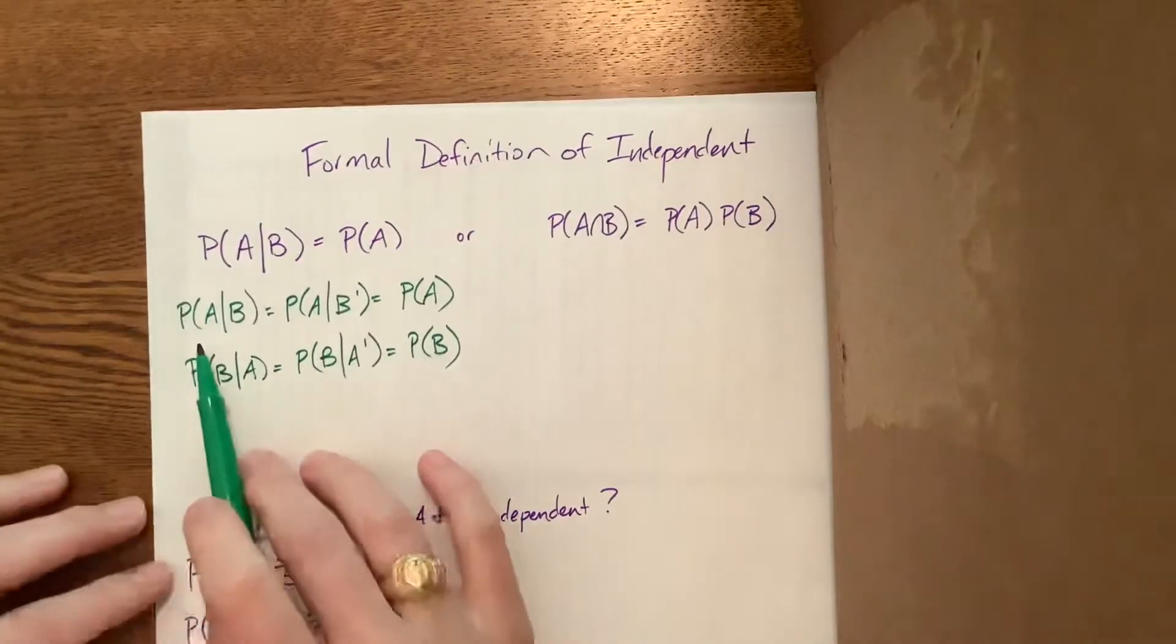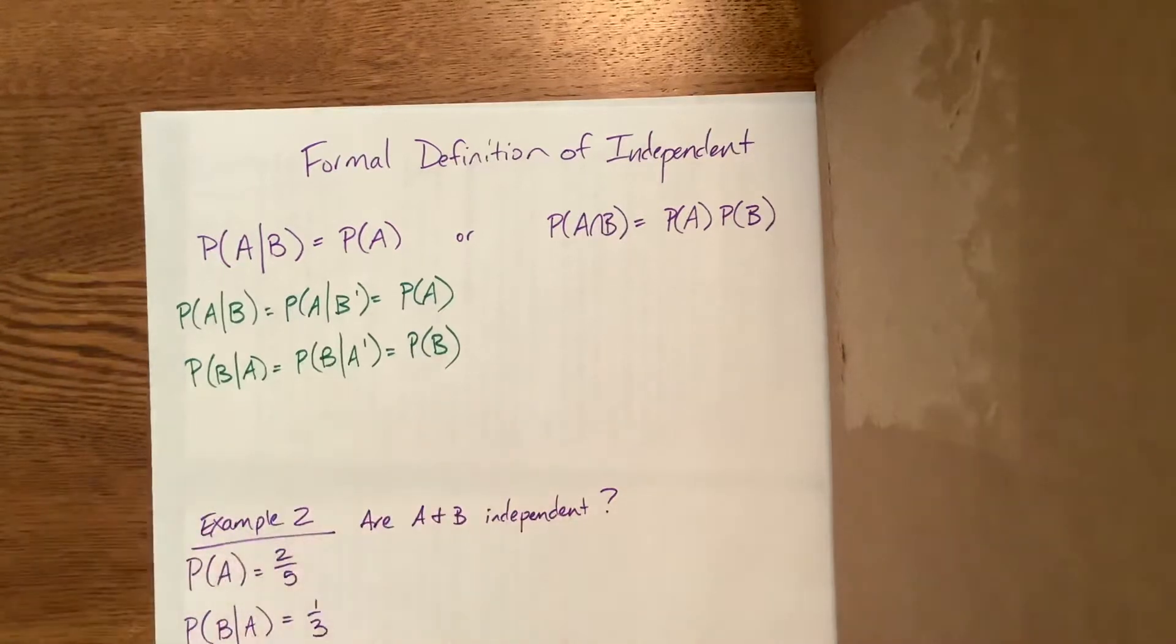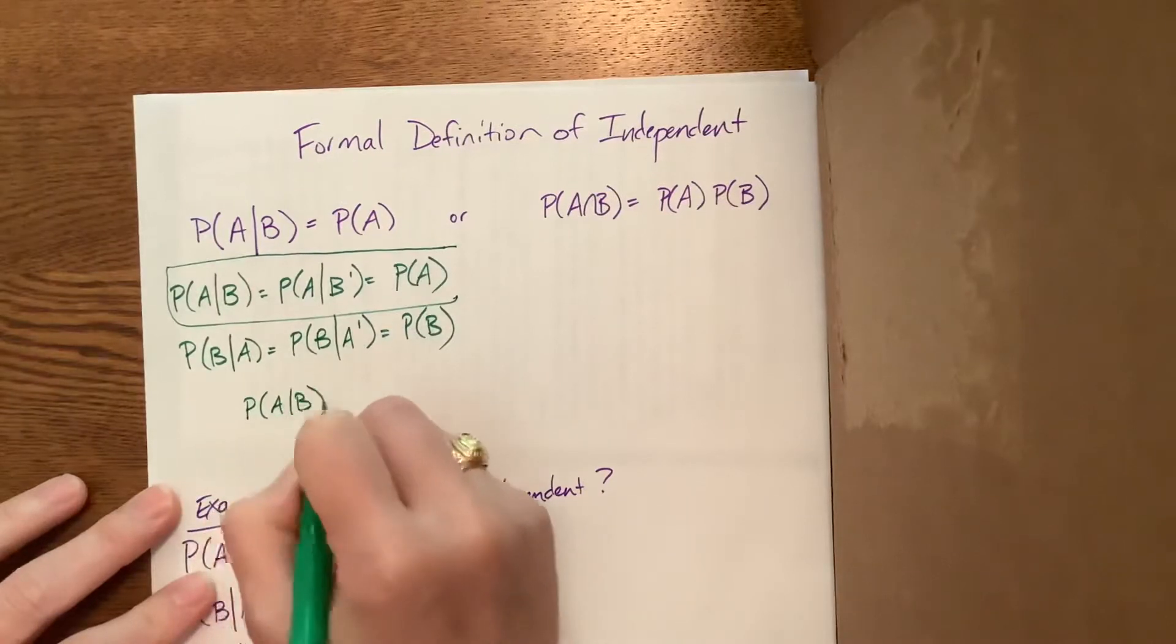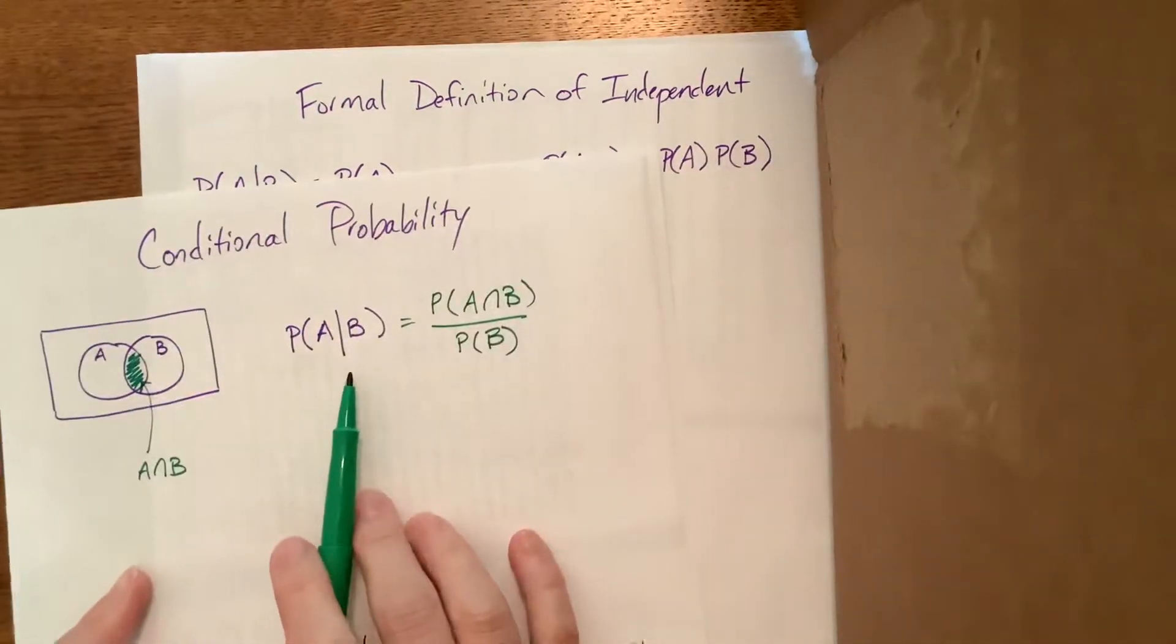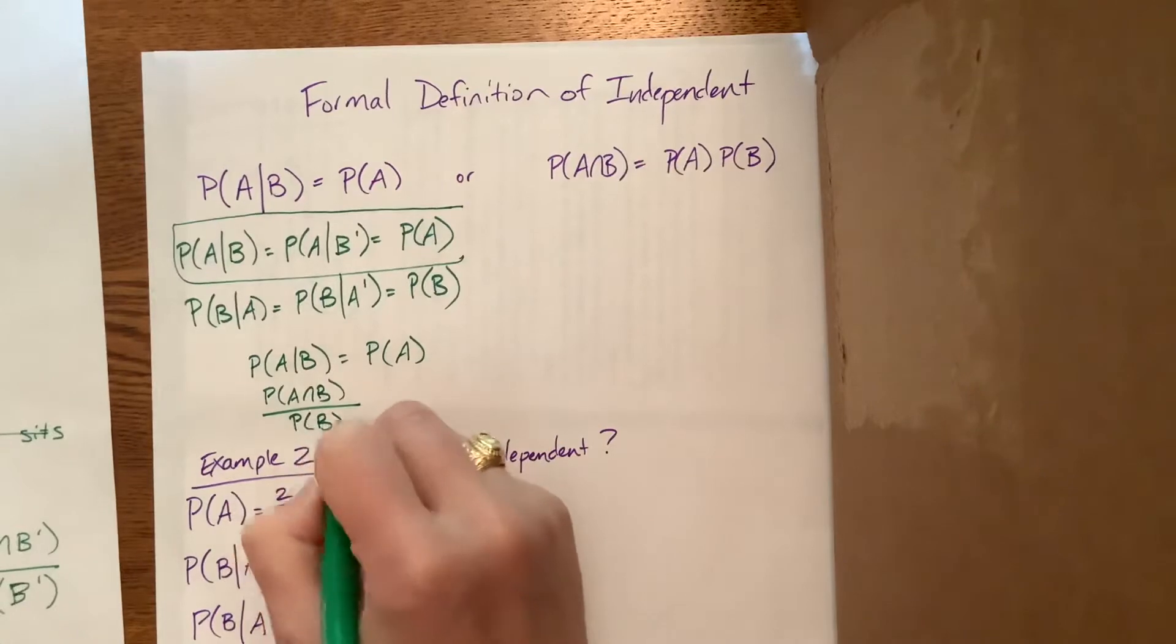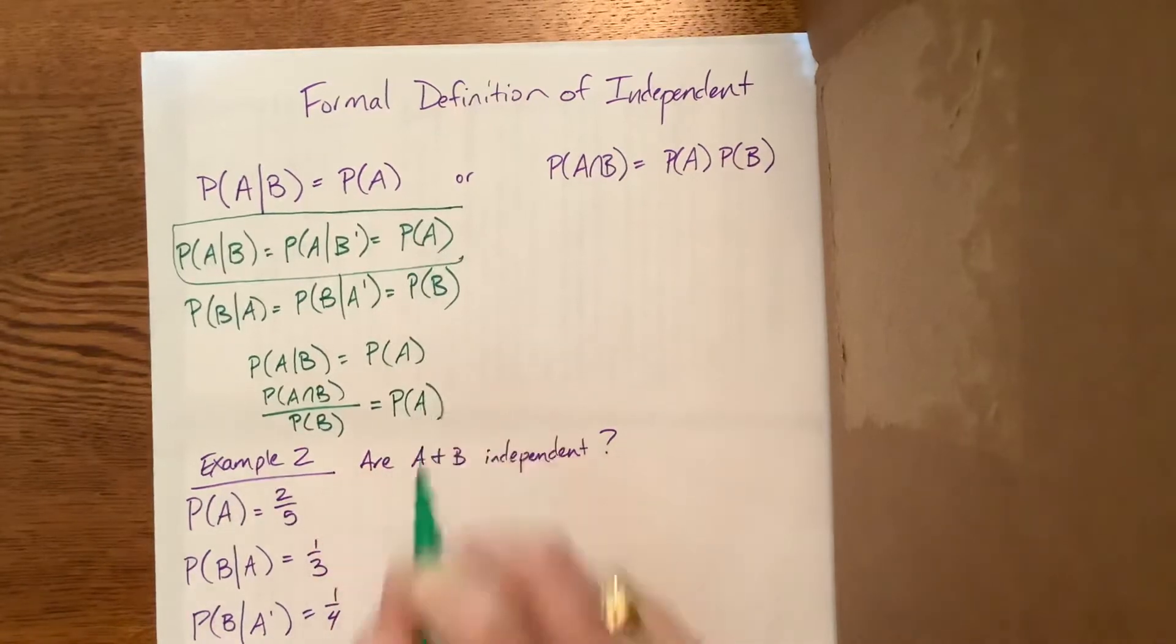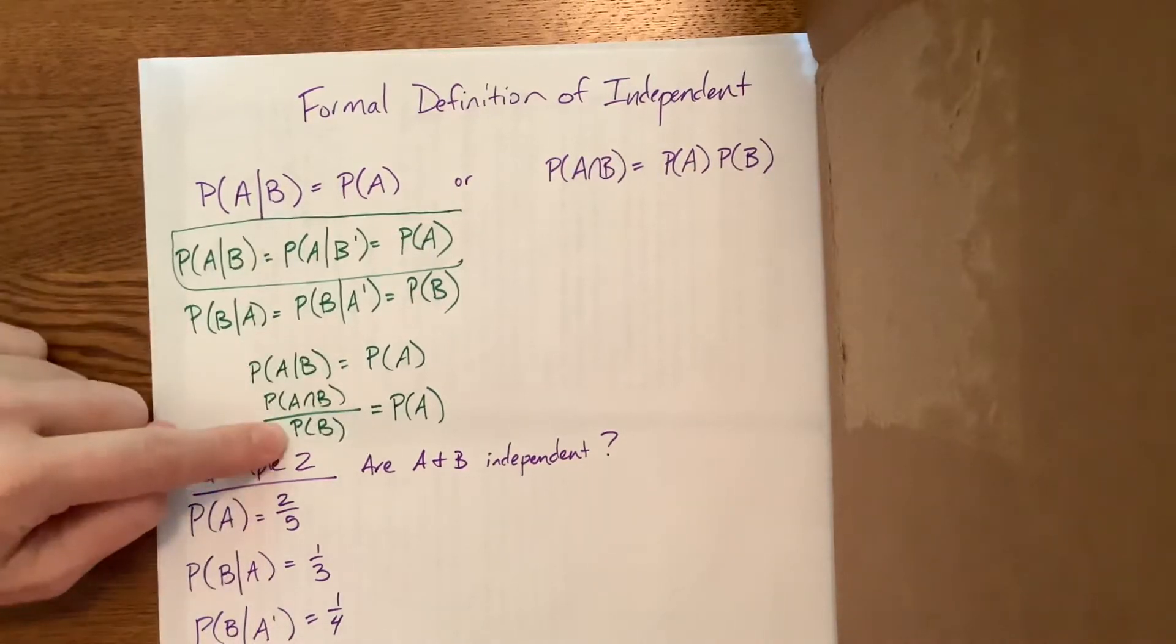In other words, what we're saying here is B or not B has no impact on what happens with A. So if this is true, you may remember from our previous video on conditional probability, the probability of A given B is equal to the probability of A intersect B divided by the probability of B. We were living in this world and we wanted to know this divided by this whole thing.